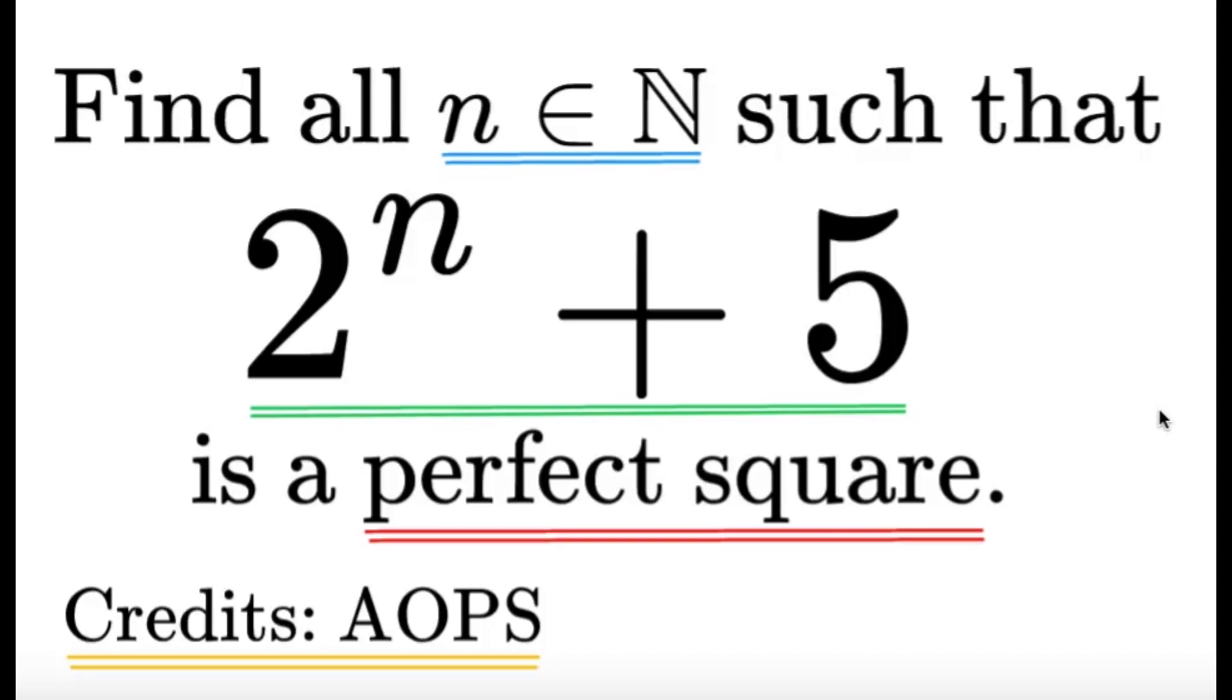Hello, hello! It's Tamflet here. Here's an item on number theory. Find all natural numbers n such that 2 raised to n plus 5 is a perfect square. Credits to the Art of Problem Solving community for this item.